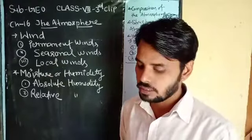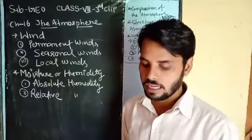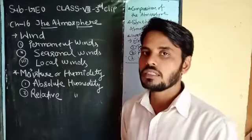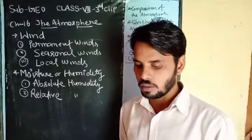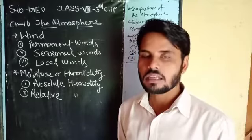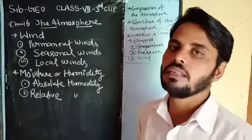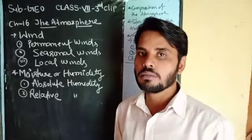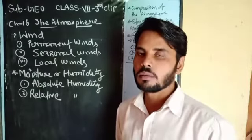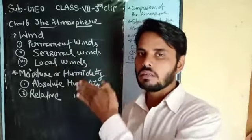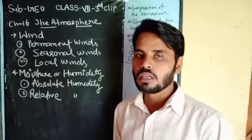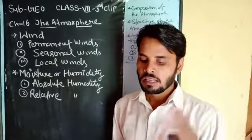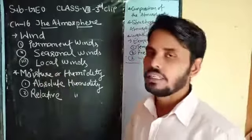Winds with seasonal changes in their direction are called seasonal winds. ऐसी हवाएं जो season के समय में जिनका direction बदल जाता है, उसे seasonal wind कहा जाता है। Example: monsoon wind। इंडिया में monsoon के समय में, बारिश के समय में हवाएं चलती हैं तो उनकी दिशा एक नहीं होती — वो कभी east से, कभी इस तरफ से, कभी उस तरफ से बहती है। Season के आधार पे हवा बदल रही है, तो इसको seasonal winds कहा जाता है। तीसरा है local winds।